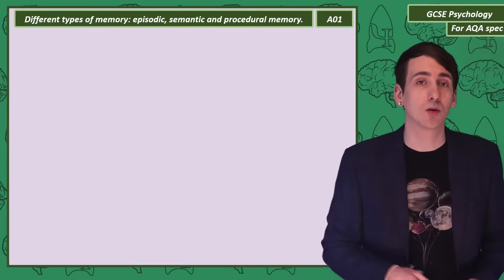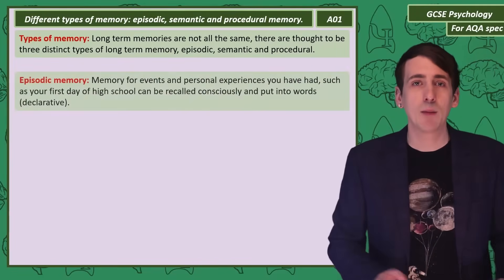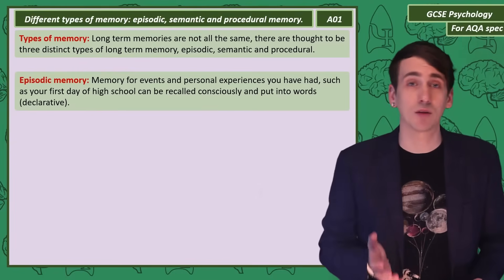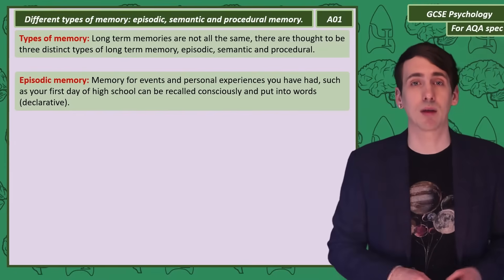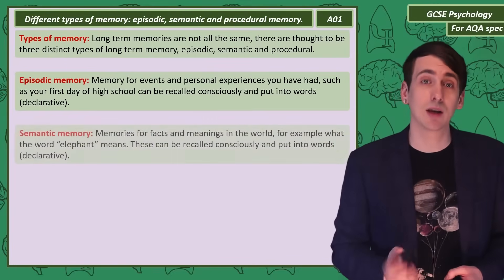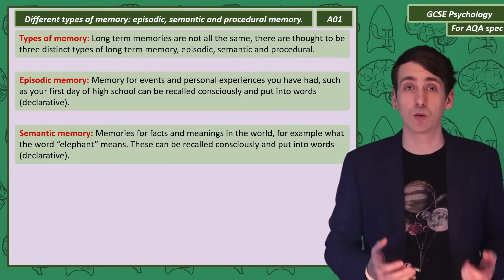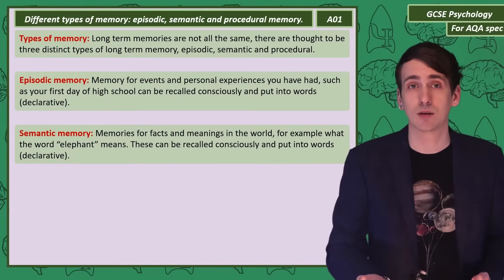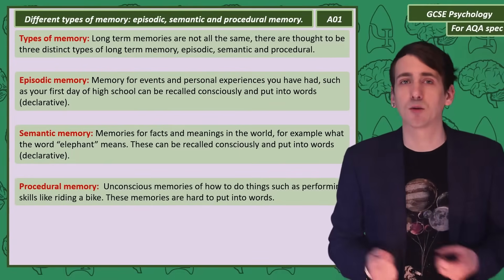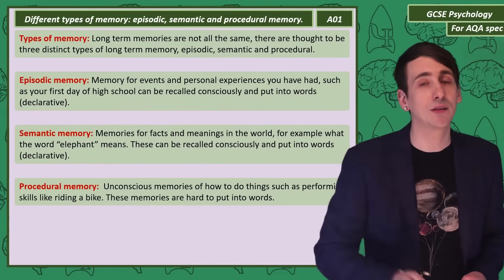Now we need to break down long-term memory into three distinctive types: episodic, semantic, and procedural. Episodic memories are how you remember your personal experiences — those things that have happened to you. So if I ask you to remember your first day at high school, you're recalling an episodic memory — you could tell it consciously and describe it in words. Semantic memory is memory for facts and meanings, so if I asked you what the word elephant means, you could consciously recall what the word means. A very different type is procedural memory — these are memories for skills, like how to ride a bike or tie a shoelace. These memories are actually really difficult to put into words and we would call them non-declarative.